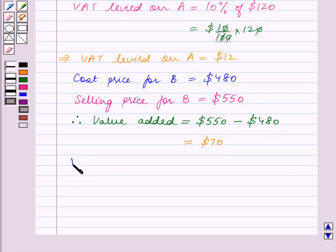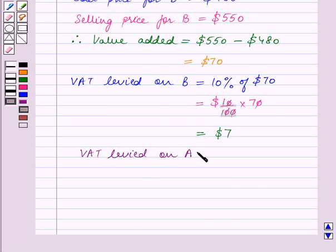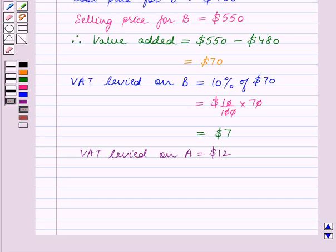So the VAT levied on B equals 10% of $70, which equals 10/100 times $70, equals $7. Therefore, the VAT levied on A is $12 and that levied on B is $7.